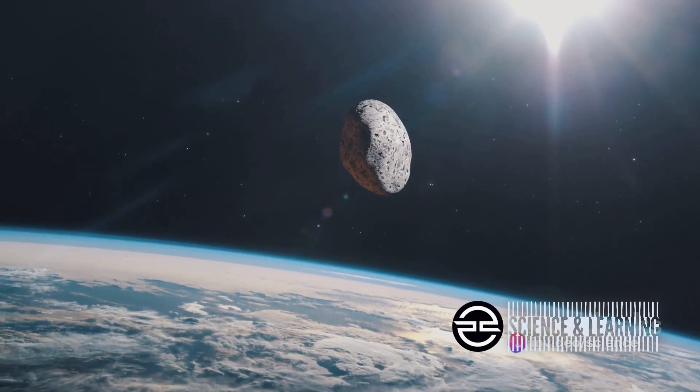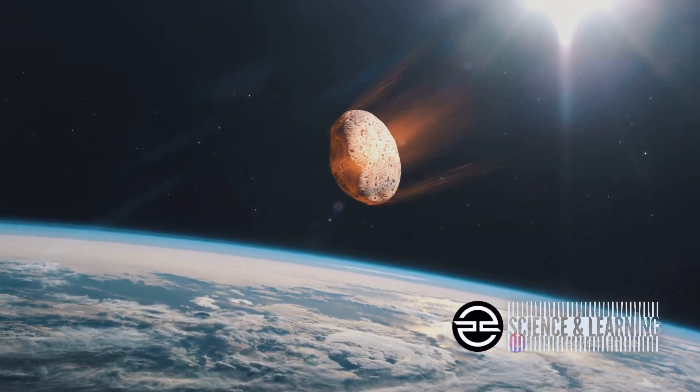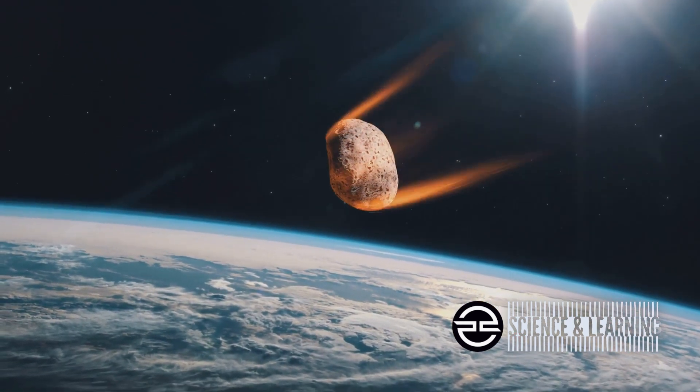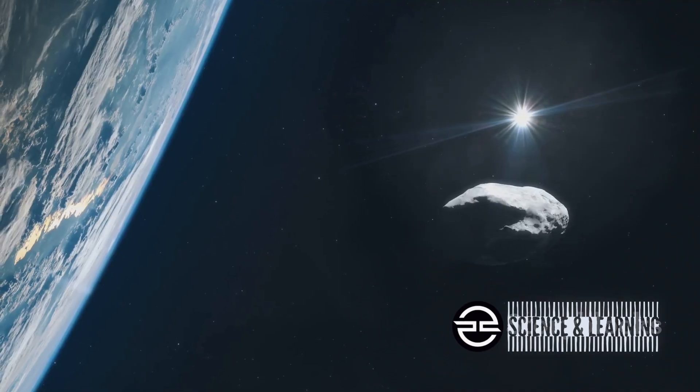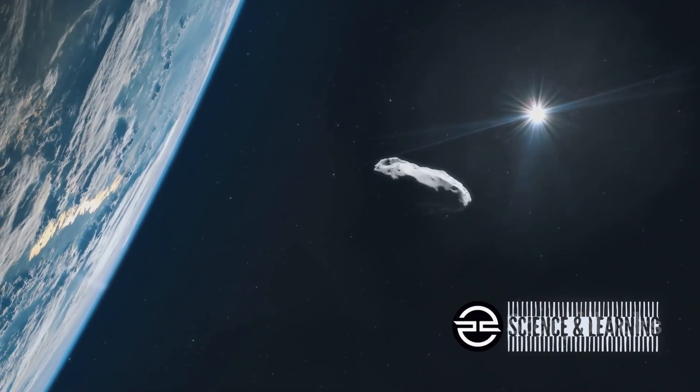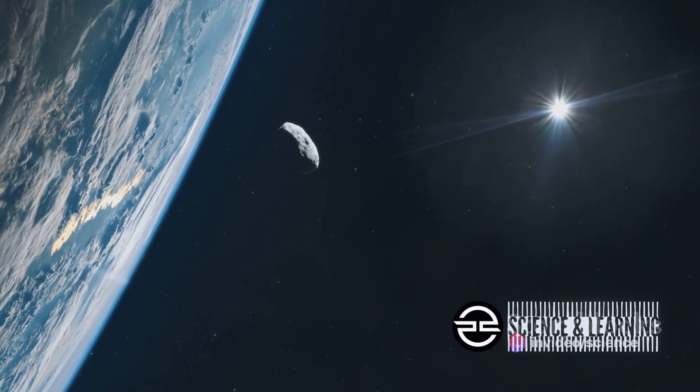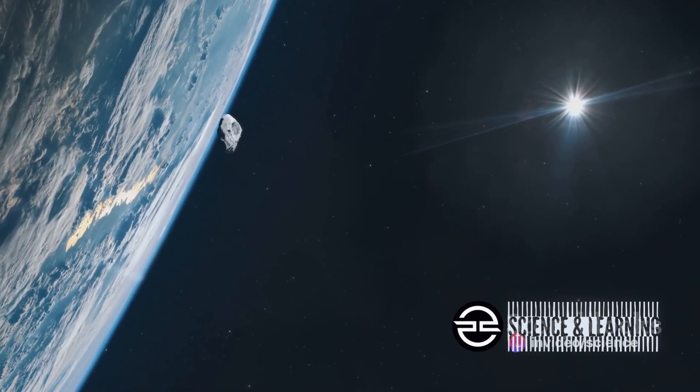This modestly sized asteroid, about 500 meters in diameter, orbits the Sun, weaving in and out of Earth's own path. Its orbit brought it close enough to us to be classified as a near-Earth object, or NEO, by our vigilant space agencies.